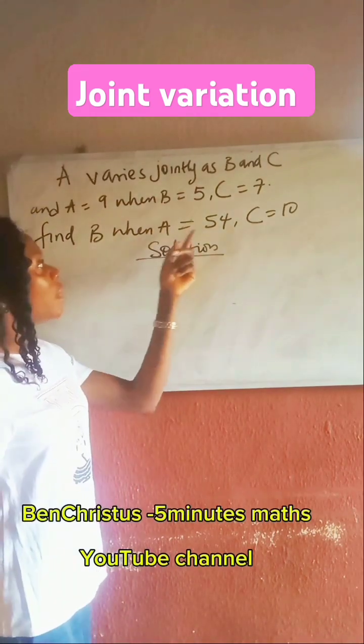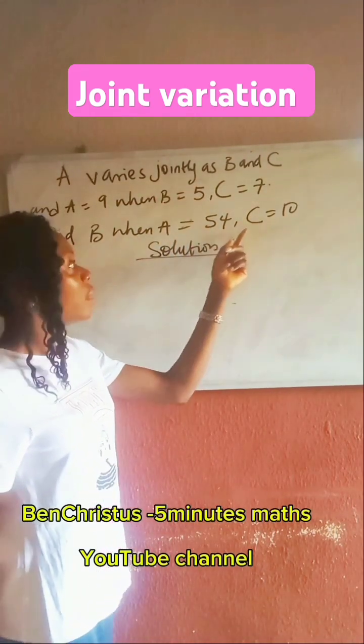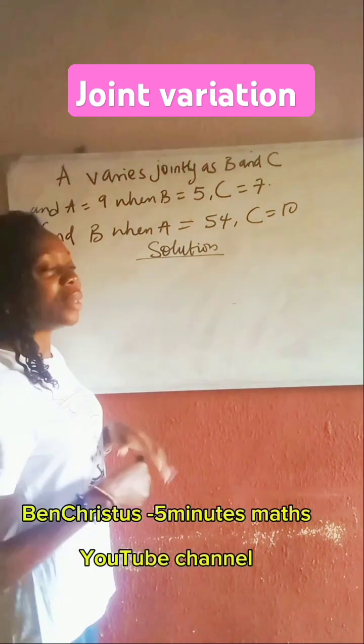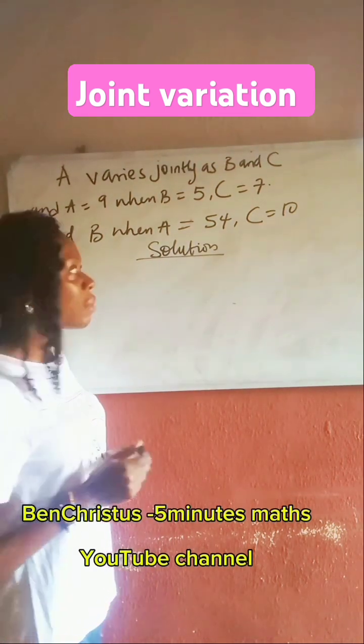Find B when A is 54, C is 10. Now in variation, we find the constant first.